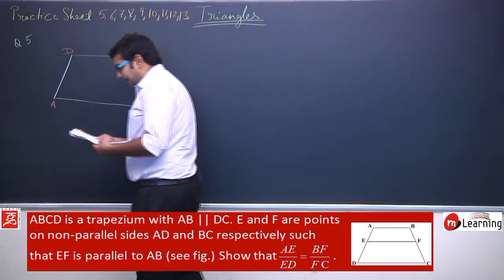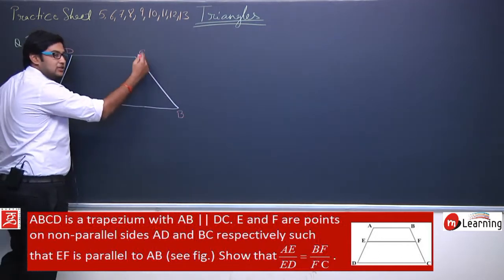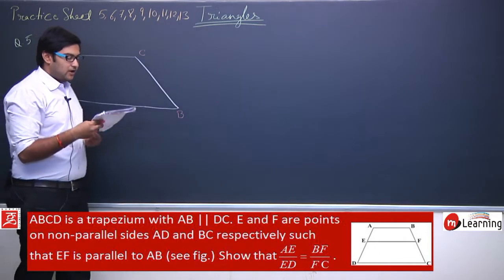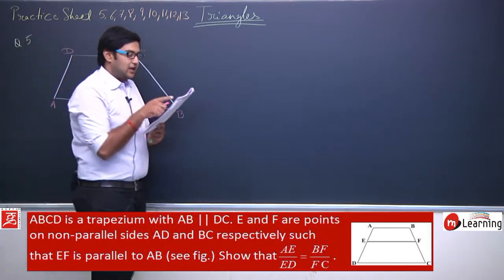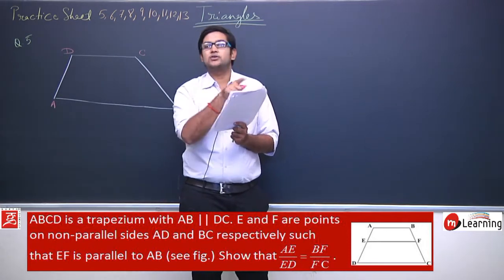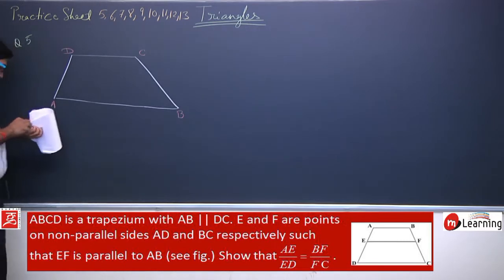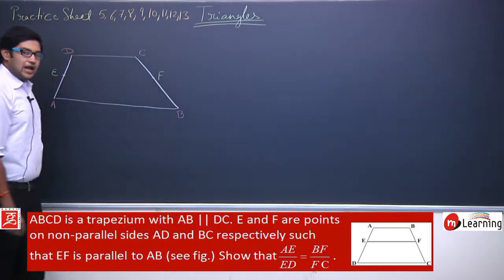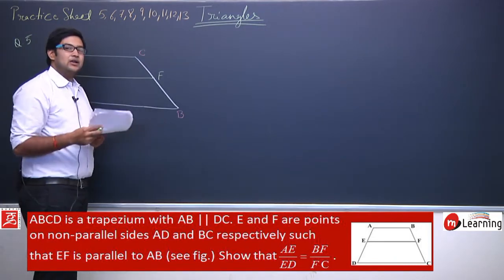E and F are points on the non-parallel sides AD and BC respectively. AD and BC are non-parallel because if we extend them they will meet at some point. So E is marked on AD and F is marked on BC. We join E and F, and this line EF is given to be parallel to AB.